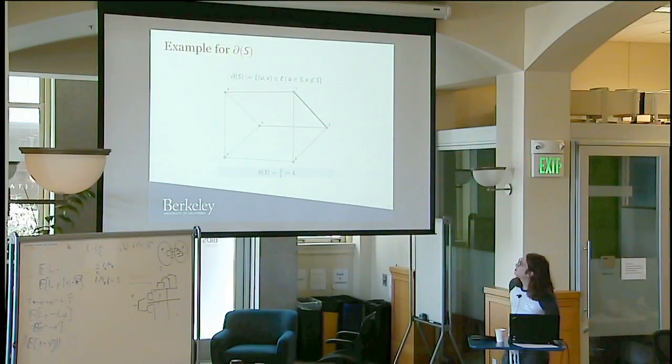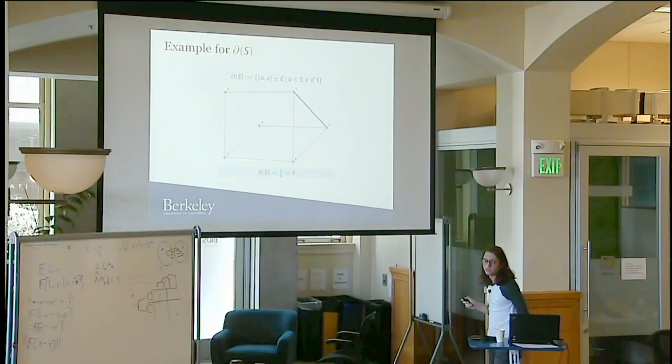I'm going to use this graph as a toy example in my talk. In this graph, I'm looking at the subset 1, 2 at the moment. The boundary is all edges leaving my subset. Here my boundary has size 4. This is a mistake, this should be a 2. The size of my subset is 2. I'm thinking of the subset as vertices, not edges. So my isoparametric ratio here is 2.